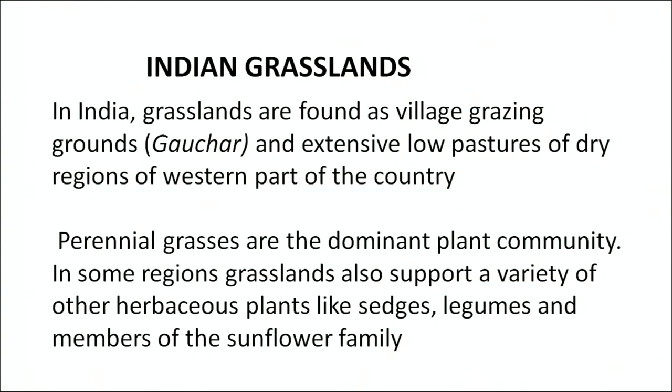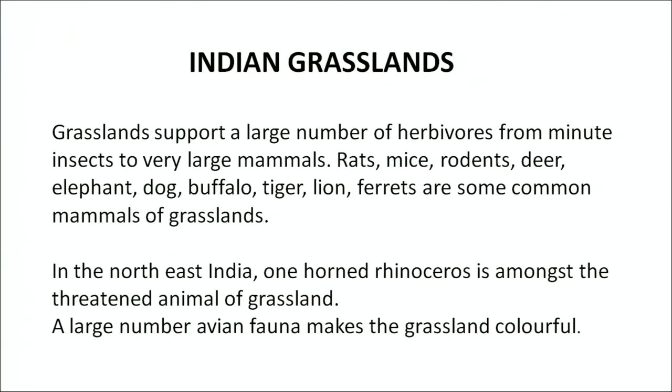Grasslands of India are found as village grazing grounds called gauchar and extensive low pastures of dry regions in western parts of the country. Perennial grasses are the dominant plant community. In some regions grasslands also support herbaceous plants like sages, legumes, and members of the sunflower family. Grasslands support a large number of herbivorous fauna from minute insects to large mammals such as rat, mice, rodents, deer, elephant, buffalo, tiger, lion, and ferret.